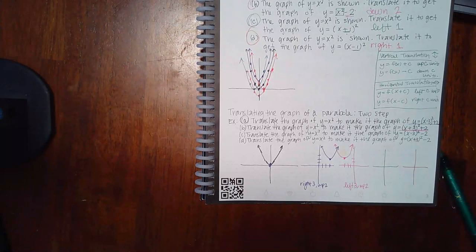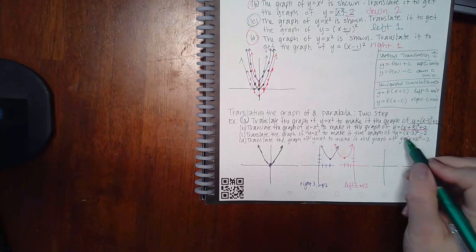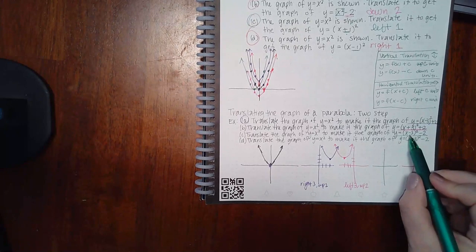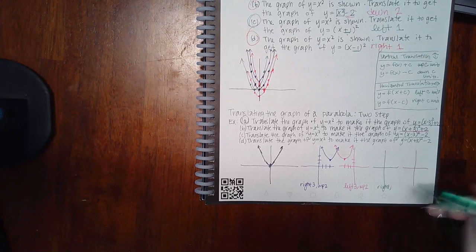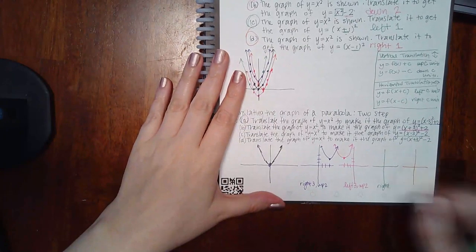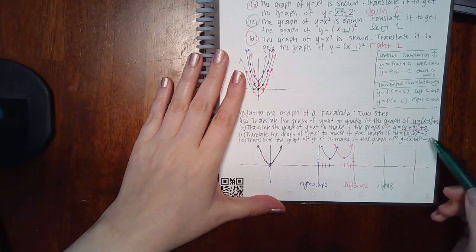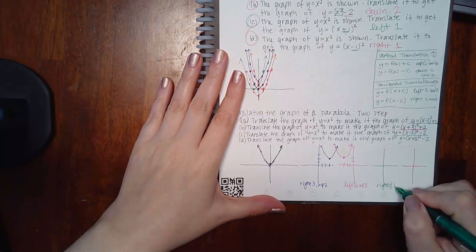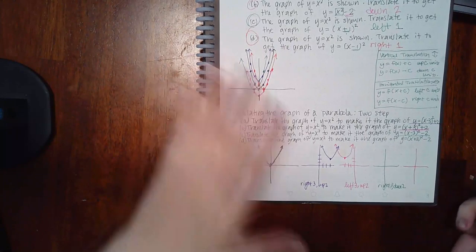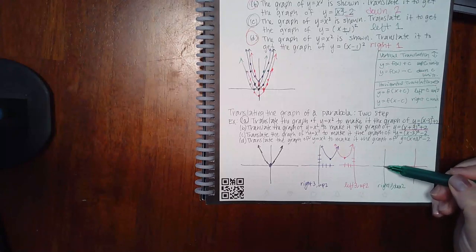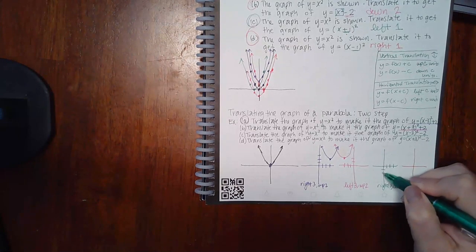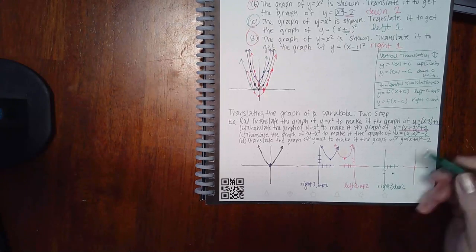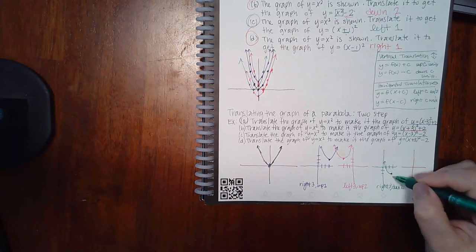For the green graph, part C: minus three on the inside means move to the right three units, but minus two on the outside means go down two units. So instead of the center being at the origin, it's going to be three to the right and two down. Move all five points and you'll end up with your parabola down in that quadrant.